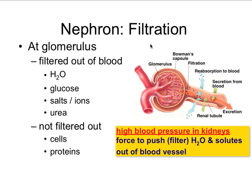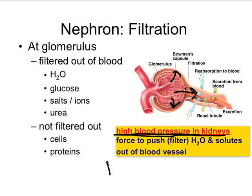A key piece: high blood pressure in the kidneys is what forces everything into the Bowman's capsule and the nephron — it forces solutes out of the blood vessel. If we don't have high enough blood pressure, our blood never gets filtered. Also, only small things get filtered; large things like cells and large proteins do not get filtered.